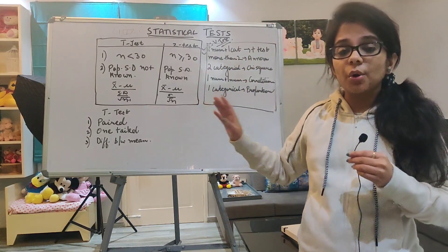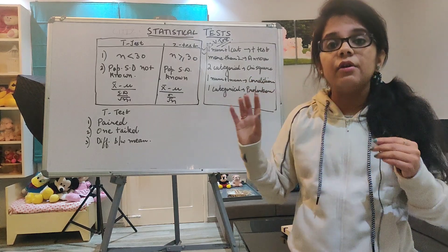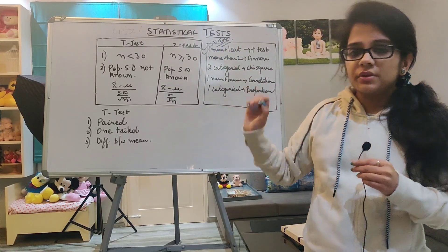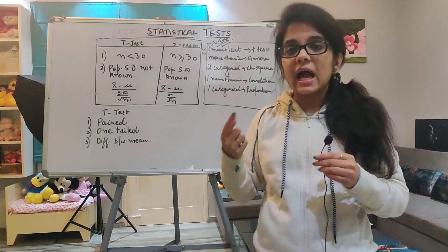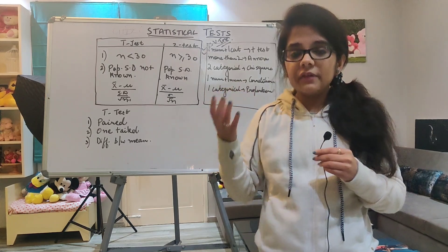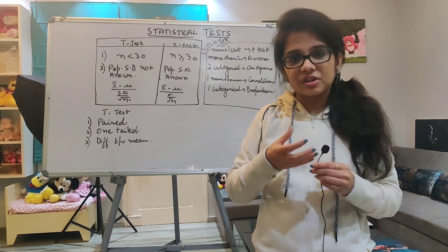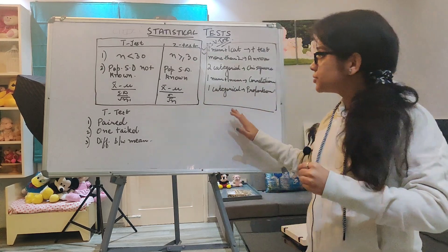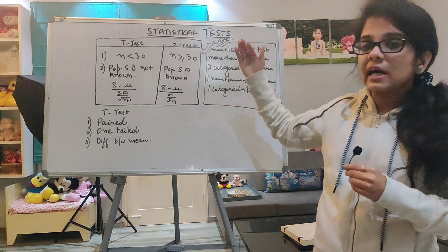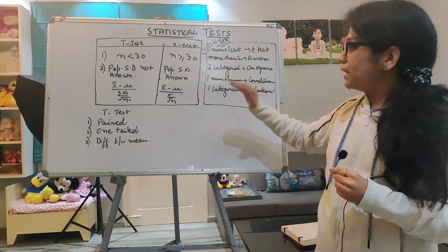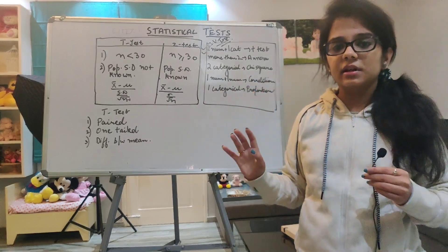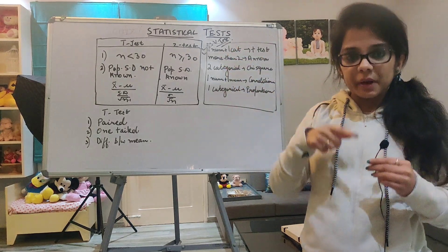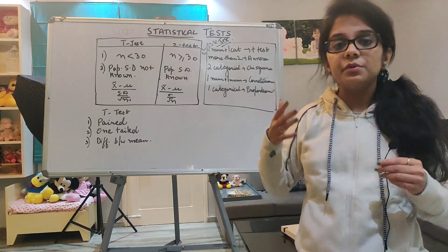Look at this table — this table will clear all your doubts and you will not find this table in any other YouTube videos. Before understanding this table, you should know the concept of categorical variables and numerical variables. Categorical variables are qualitative variables that cannot be measured in numbers. Numerical variables can be quantitatively described. This table explains when each test is used. T-test is used when one variable is numerical and the other variable is categorical.